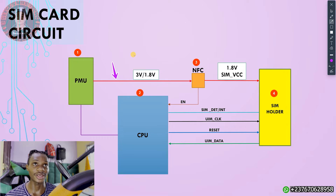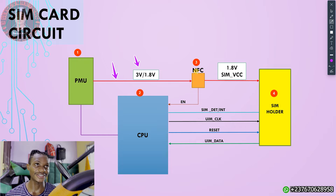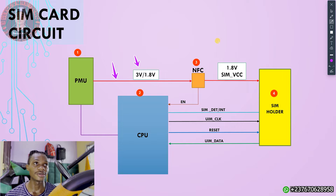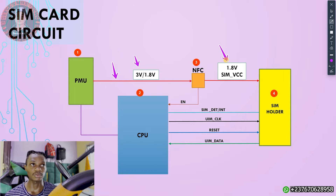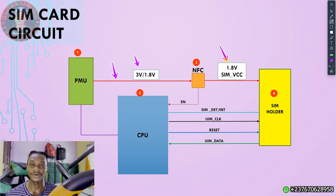The PMU IC needs to supply the NFC IC with a voltage — either 3 volts or 1.8 volts. When that voltage gets into the NFC IC, the NFC IC is going to step down that voltage to 1.8 volts. The NFC IC only steps down the voltage to 1.8 volts if it receives 3 volts in.